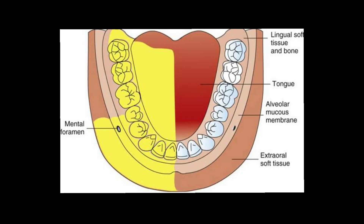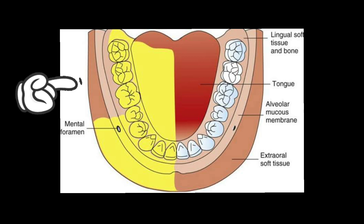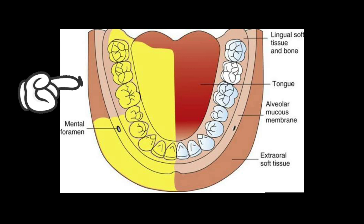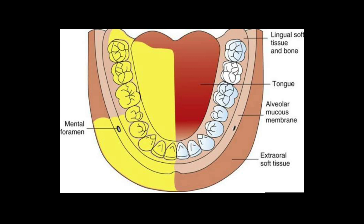The areas anesthetized with the inferior alveolar nerve block are: mandibular teeth to the midline, body of the mandible, inferior portion of the ramus, buccal mucoperiosteum and mucous membrane anterior to the mandibular first molar due to the mental nerve, anterior two-thirds of the tongue and floor of the oral cavity due to the lingual nerve, and lingual soft tissues and periosteum due to the lingual nerve. As you can see in this picture, the yellow colored portion is the area anesthetized.